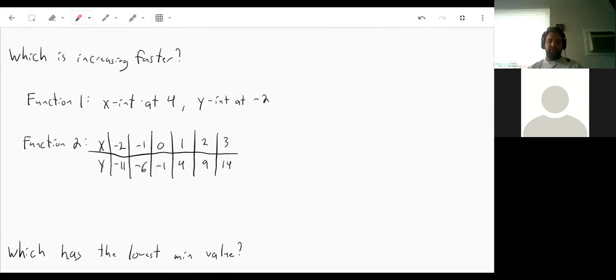So other things we might be asked to do in this section to figure out which equation is increasing faster. Well, first, we have a function where the x intercept is at four and the y intercept is at negative two. So if we go and graph this, I'm going to interpret this as it will be a straight line. So our x intercept is at one, two, three, four. Y intercept is at negative two. So that means our slope would be going up two right four. So we'd have a slope of one half.